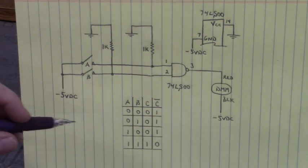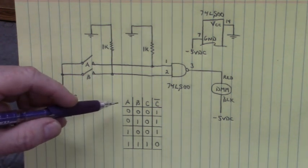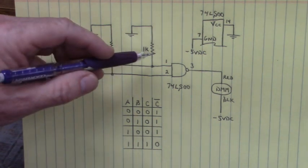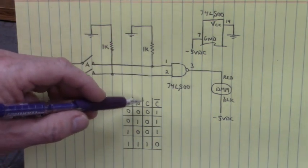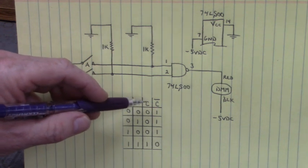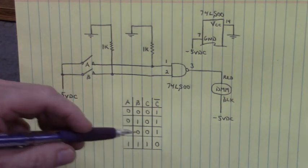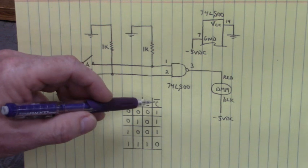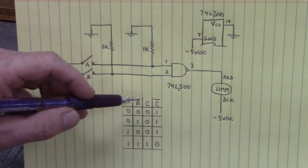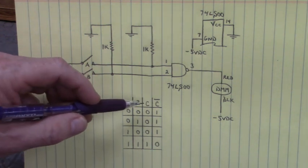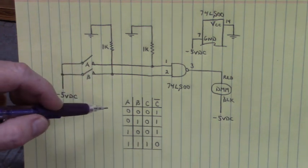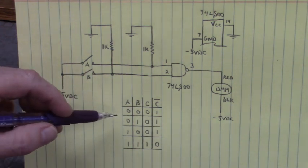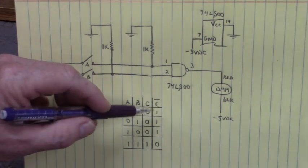Okay, so the truth table. We have inputs A and B, pins one and two. The output here for a NAND gate is this column. For a NAND gate it's C bar. So we have A, B, C and C bar. We are going to start out at zero zero and our output is going to be high.